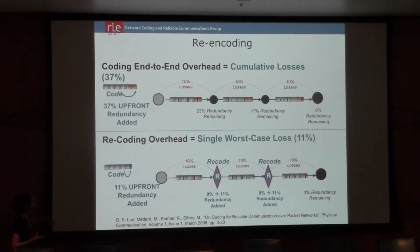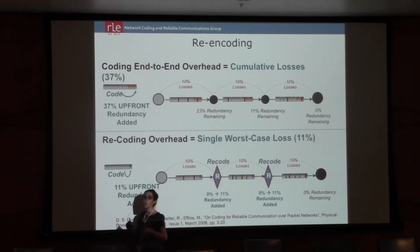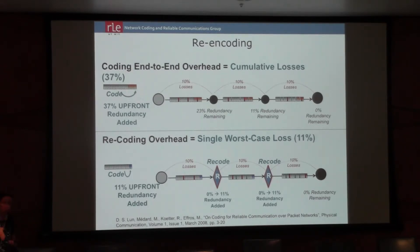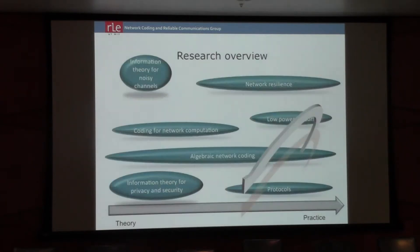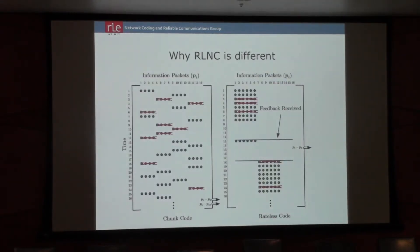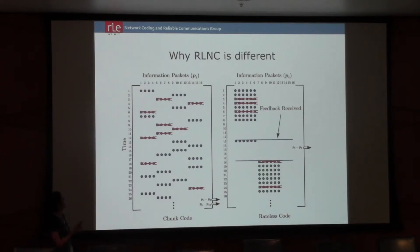At this point, we had become convinced — there's particularly some work with my former student Desmond Lun — that we could do this recoding over a network. You could show that if your links were just experiencing losses, not errors, this was capacity-achieving: you would always get to the minimum cut, whatever that cut was, given the losses. We were very tempted to stop at this point, but we were really hoping that something would happen on the protocol side. It wasn't happening, so we started looking a little bit at protocols.